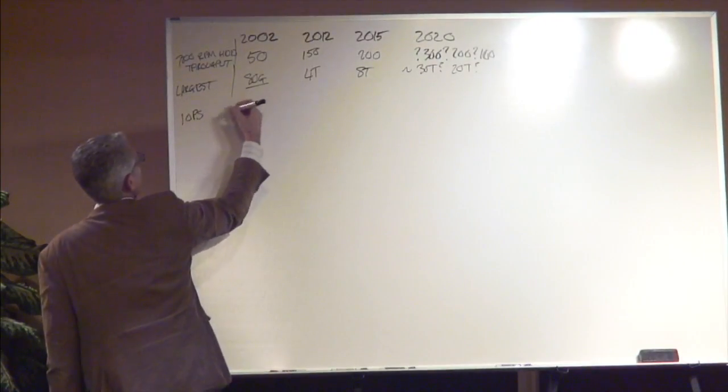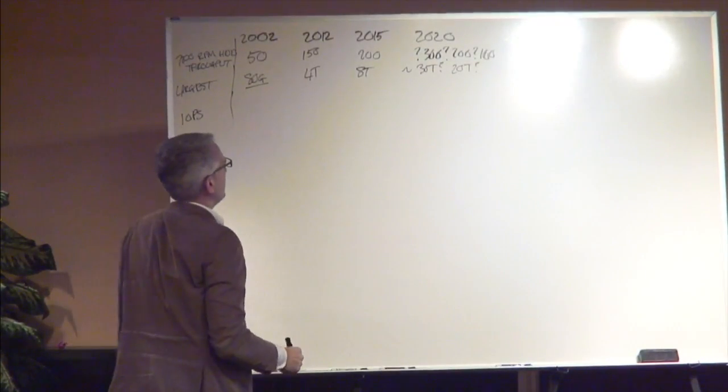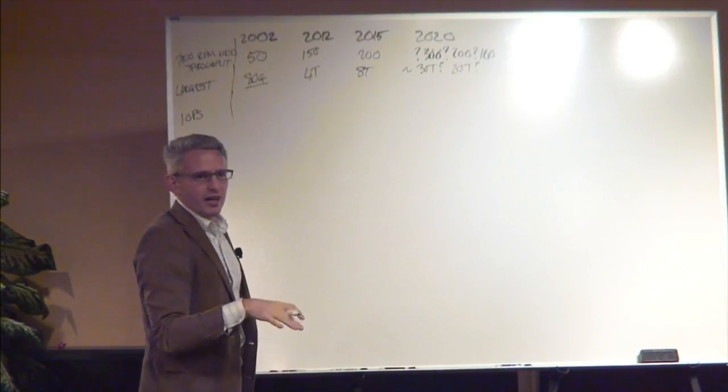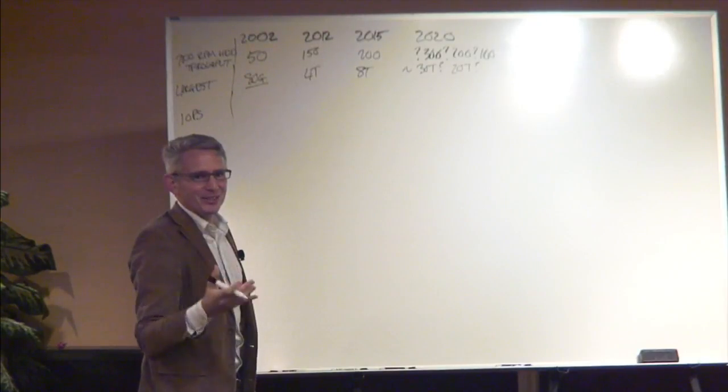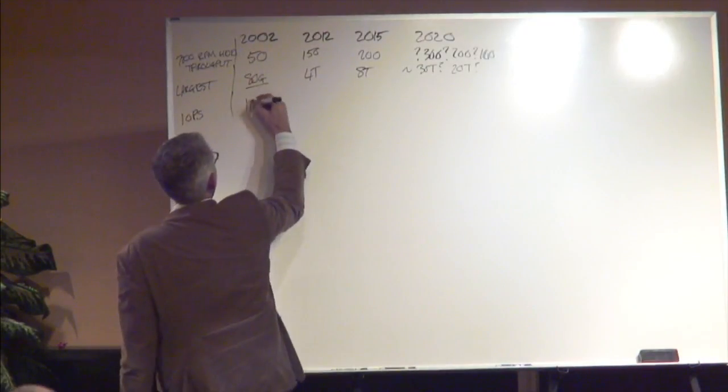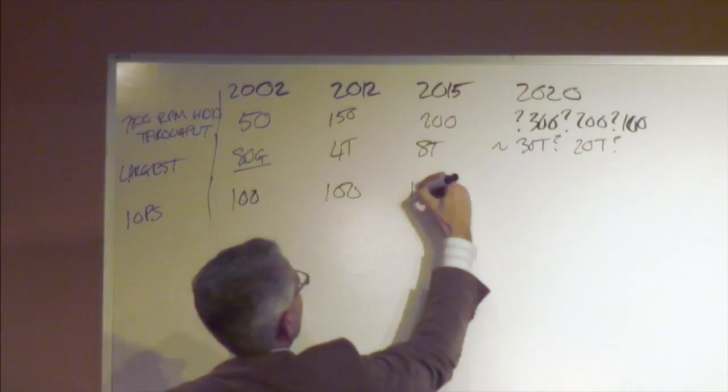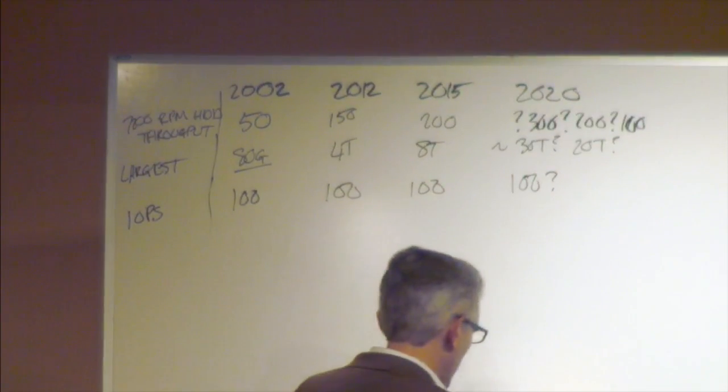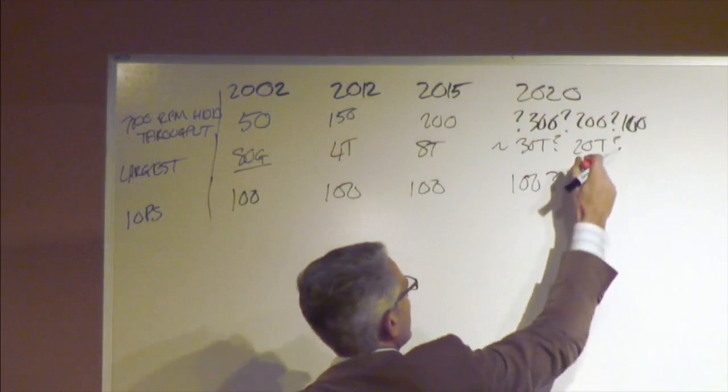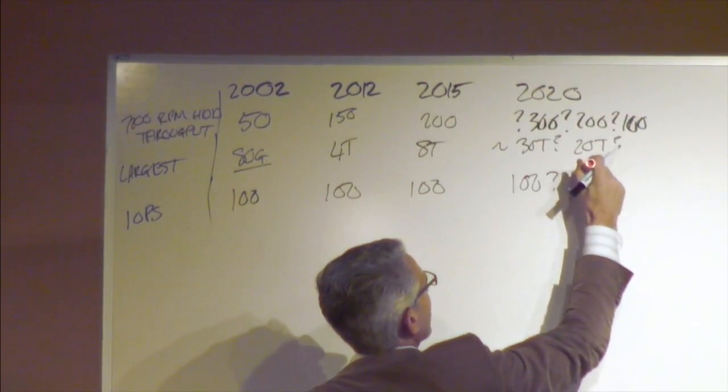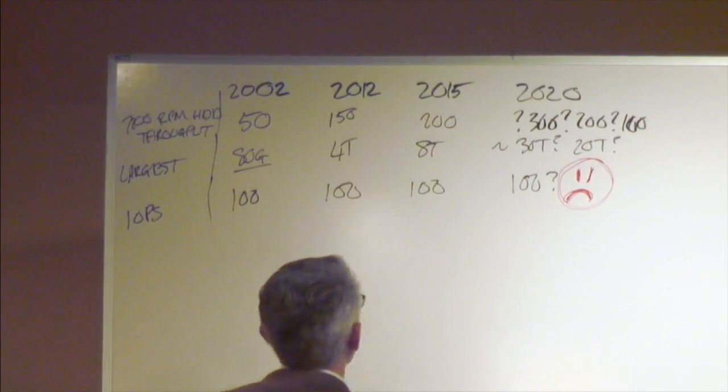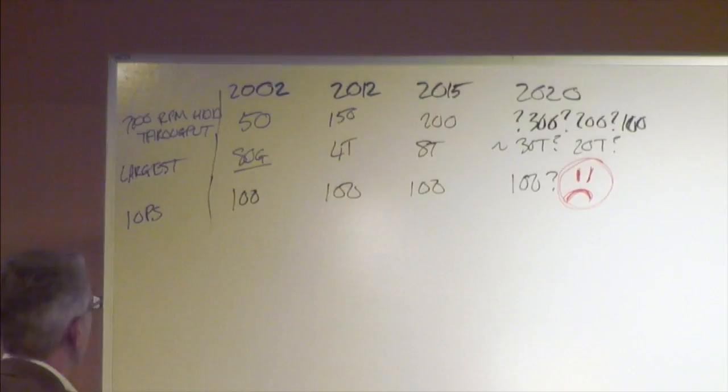IOPS of a 7200 RPM drive across this time period is a hundred IOPS. It doesn't matter what you do to it. Let's say it's a hundred and sad face. We don't even know if there will be 7200 RPM drives in 2020, or whether they'll be even slower.